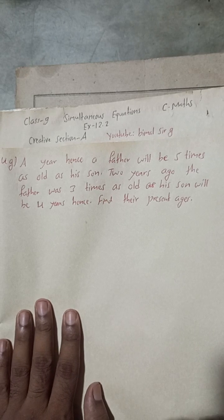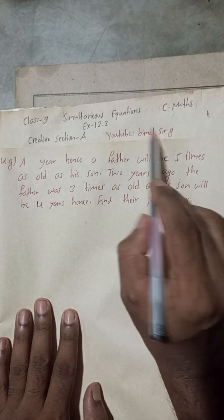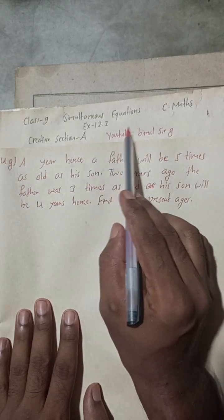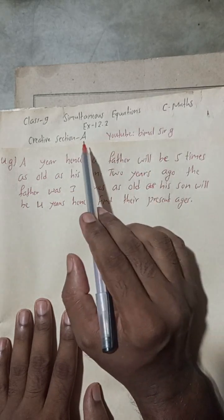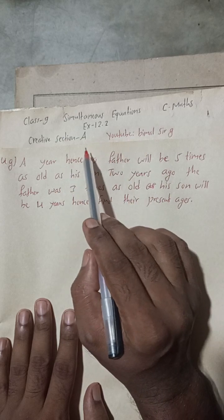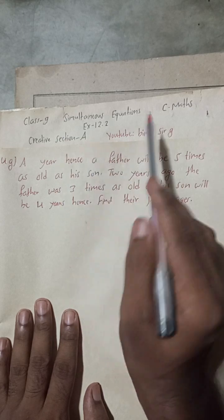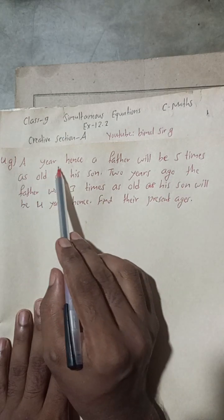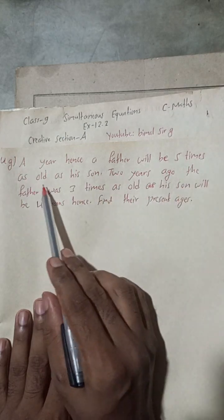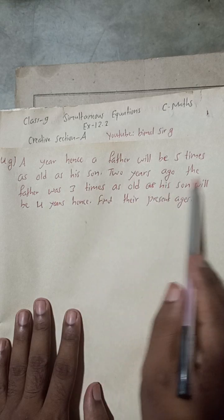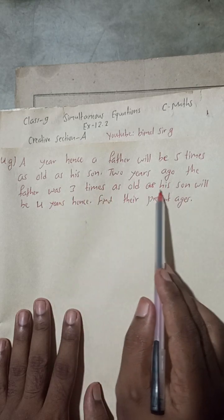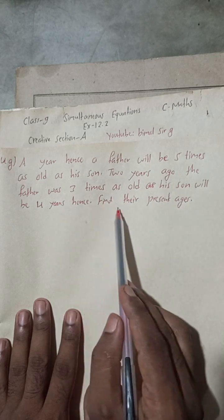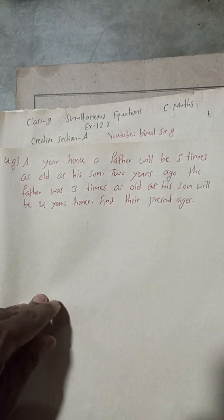Hi everybody, welcome back to Bimmal Surji YouTube channel. This is question number 4g of class 9 simultaneous equations, compulsory mathematics exercise 12.2, creative section A. Solutions for creative section B is already uploaded on YouTube, you can check the playlist. This question is 4g: a year hence a father will be five times as old as his son. Two years ago the father was three times as old as his son will be four years hence. Find the present ages.